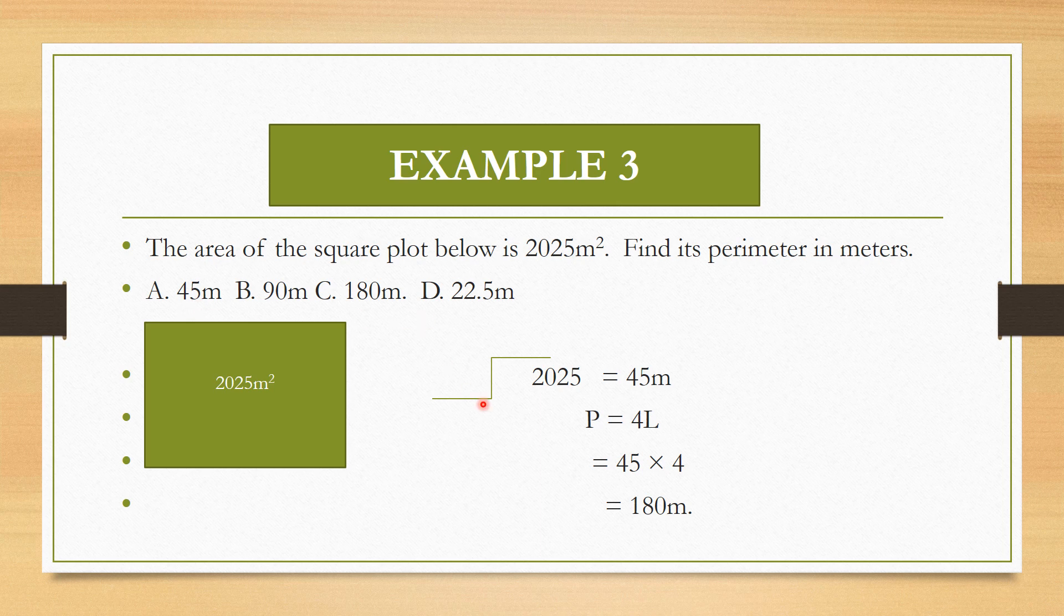5 meters is the length of one side, but the question does not ask you to find the length of one side. The question is asking us to find the perimeter. So after getting the length of one side, apply your formula: perimeter of a square equals 4L, which is 5 times 4, giving us 20 meters. That question was also very easy. Let's move to our fourth example.